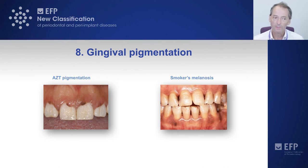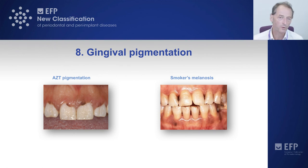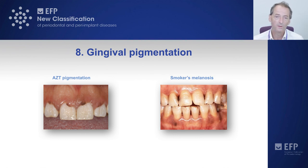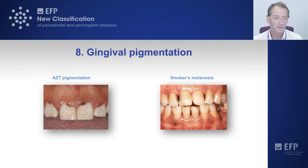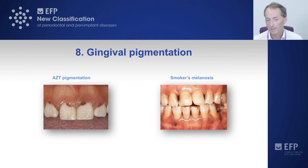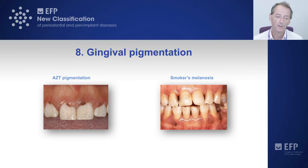Finally, group eight covers pigmented lesions. One example is drug-induced pigmentation, which can occur with drugs like hydroxychloroquine used in the treatment of lupus or for malaria prophylaxis. In this case, AZT — an antiretroviral drug — causes a nodular pigmentation. And in smokers, a brown or sometimes slaty-grey pigmentation of the gingival tissues can develop, a condition known as smoker's melanosis.